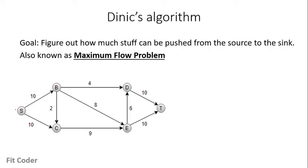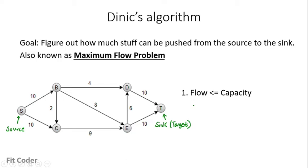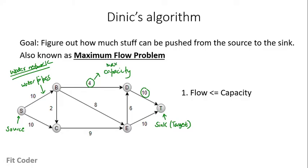If we are given this graph with S as our source vertex and T as our sink or target vertex, we can think of this entire graph as a water network with the edges as water pipes. The edge weights are the maximum capacity of these pipes — how much water can flow per second. We define the flow as the current amount of water we are allowing to pass through an edge. The first rule is that flow should be less than or equal to capacity.